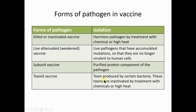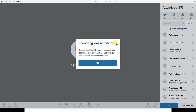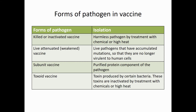In a toxoid vaccine, certain toxins produced by bacteria such as Clostridium tetani and Corynebacterium diphtheriae are purified from those bacteria. These toxins are then inactivated by treatment with chemicals or heat, so they become inactive. The vaccine produced this way is known as a toxoid vaccine, and it is introduced into the person's body.